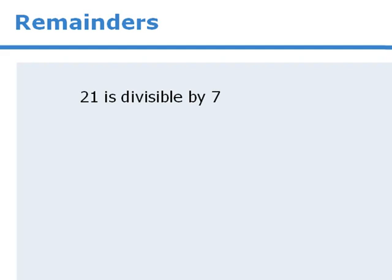For example, we've learned that 21 is divisible by 7. We know this because when we divide 21 by 7, we get an integer, and that integer is 3.